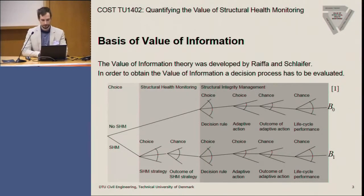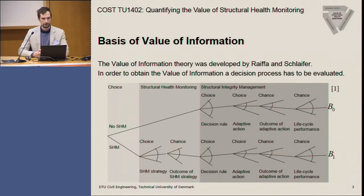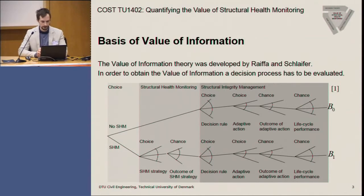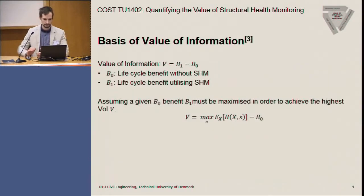A general value of information, as probably already known by all of you, is the difference between two benefits we might realize in a system. B0, in the diagram by Faber, Terns, and Wall from the last workshop in Copenhagen, is a benefit realized without a structural health monitoring system. B1 is the benefit realized with a structural health monitoring system, and the difference of these two is the overall value of information we can gather with the SHM system.